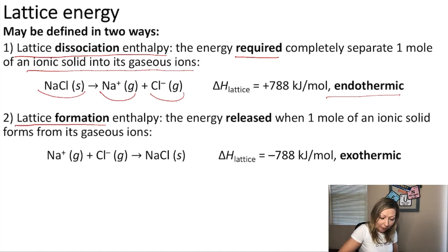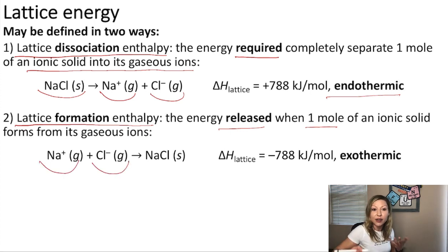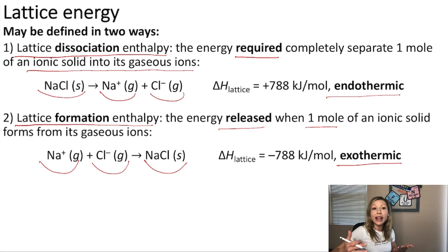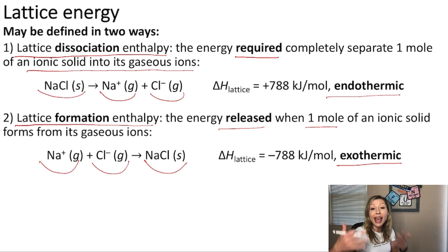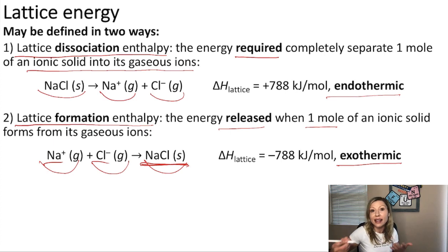If we look at the lattice formation enthalpy — how much energy is released when one mole of an ionic solid is formed from its gaseous ions — so we have Na+ and Cl- ions forming NaCl solid, this is going to be a highly exothermic process, meaning that we are going to release a lot of energy. When I think about lattice energy, I generally think about the lattice formation enthalpy, because the formed ionic compound is going to be significantly more stable than the separated ions in their gaseous state.